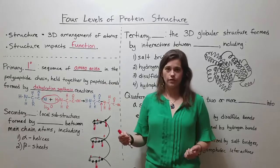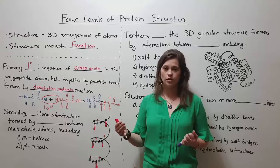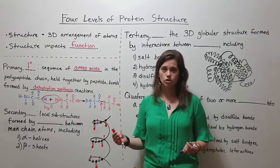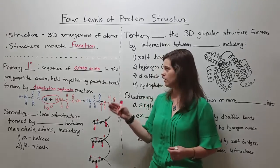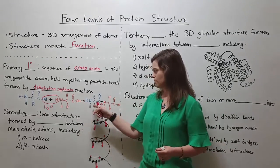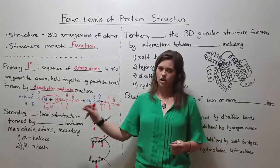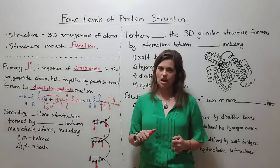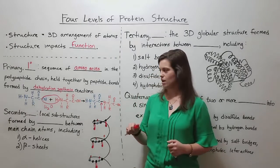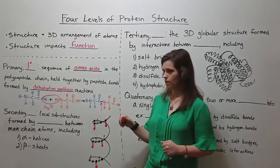It's simply the amino acids in the polypeptide chain — maybe there's 40 or 50 amino acids, maybe there's 100 or 150, maybe there's over 200. But whatever that number is, it's just the amino acids as they are lined up down the length of the polypeptide, held together by those peptide bonds.